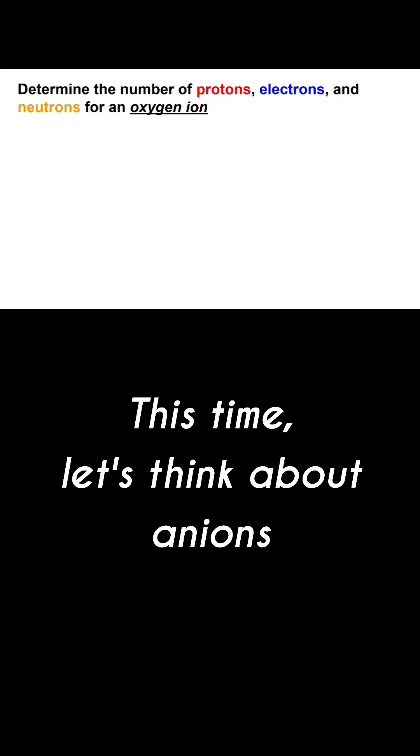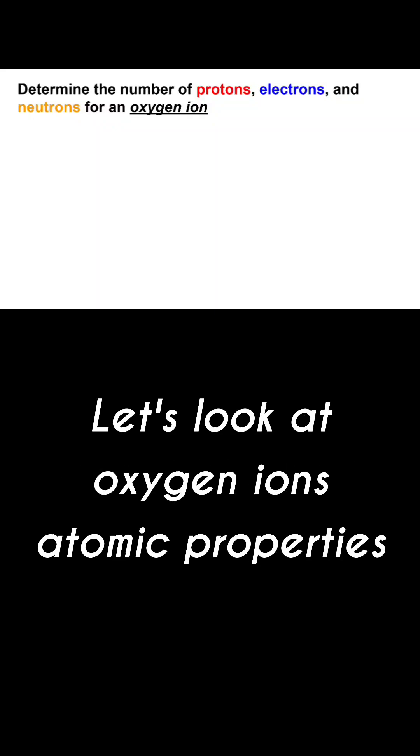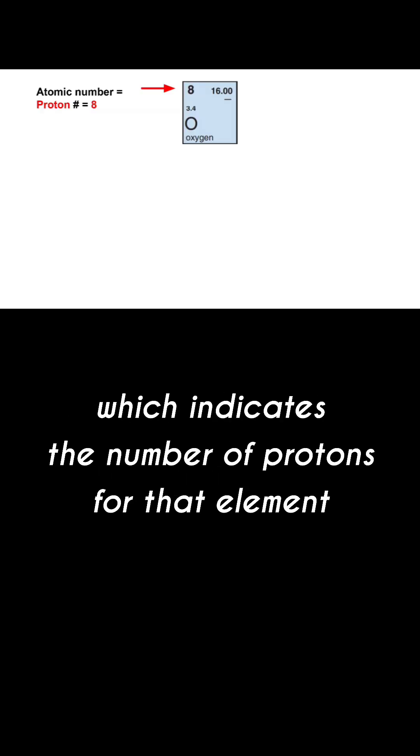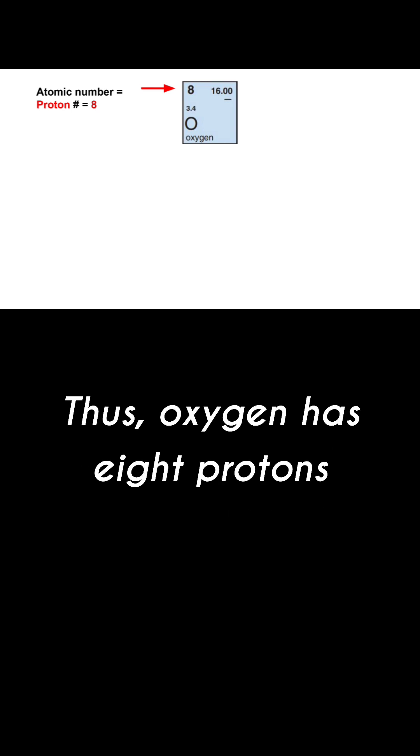This time let's think about anion. Let's look at oxygen ions atomic properties. First place that you should start is atomic number which indicates the number of protons for that element. Thus oxygen have eight protons.